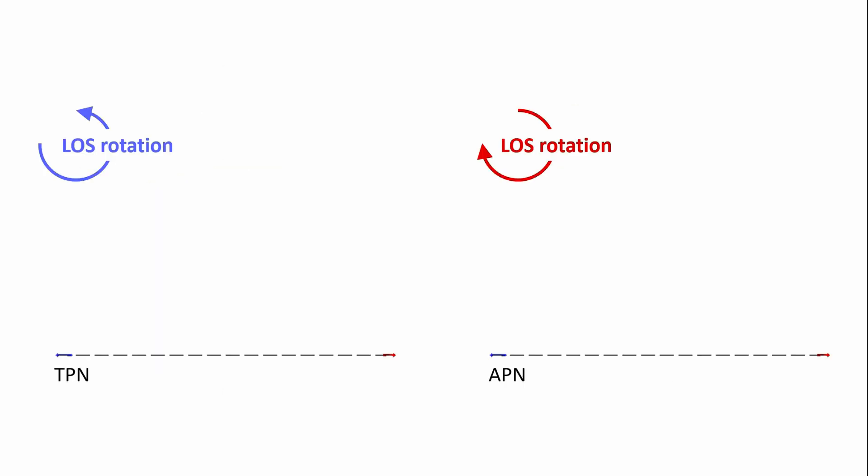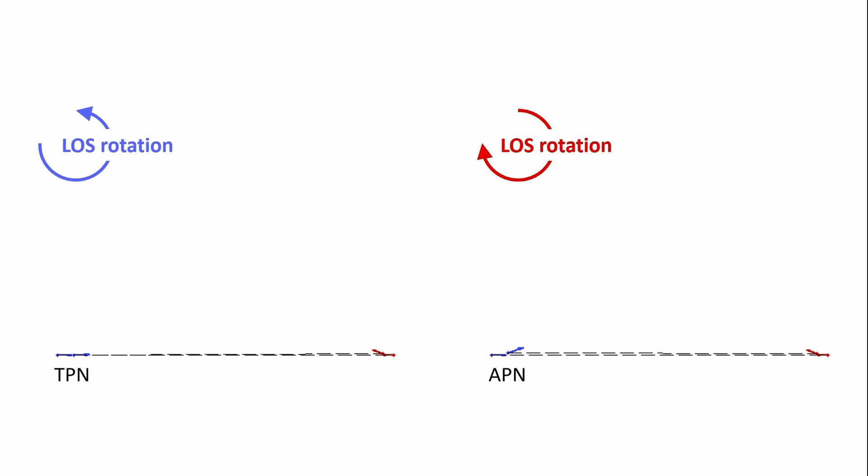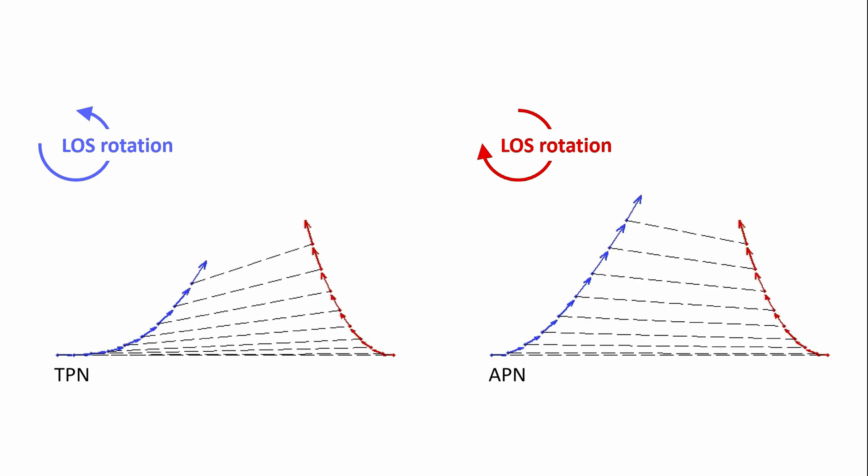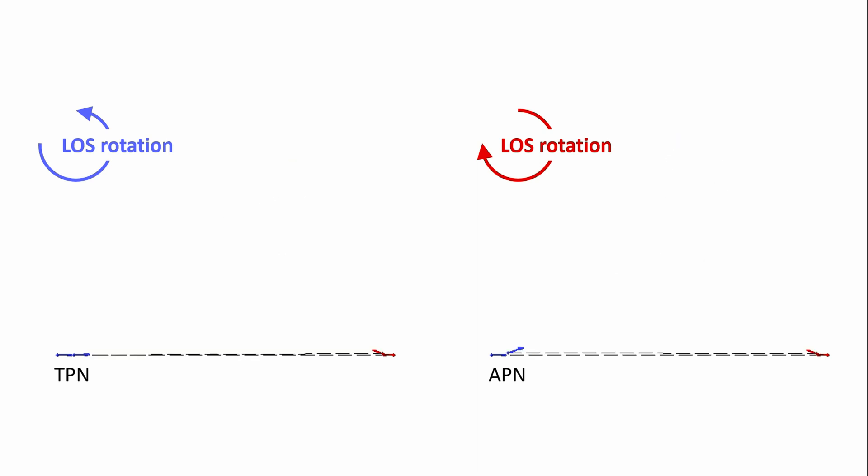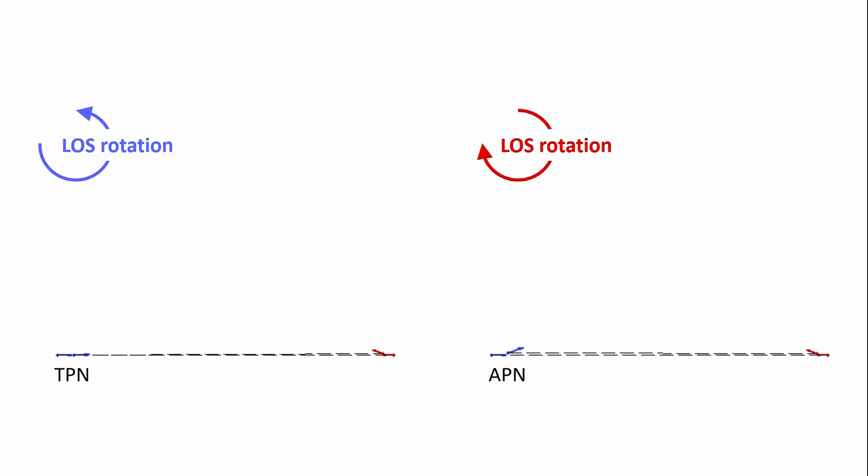The line of sight rotation is more apparent from the engagement visualization. Notice the counter-clockwise rotation in true and the clockwise rotation in augmented. For augmented, that clockwise rotation of the line of sight angle puts the pursuer above the target in anticipation of intercept. While in true, the counter-clockwise rotation puts the pursuer below the target.